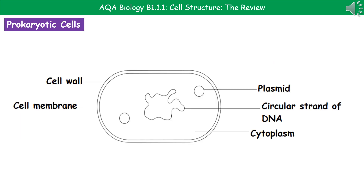The third type of cell we need to know about are prokaryotic cells, which are bacterial cells. There are five key features to know. Around the outside, there is still a cell wall and a cell membrane, just like in plant cells. But inside there are some key differences. We still have the cytoplasm, but rather than a nucleus, we have a circular strand of DNA in the middle. We also have plasmids, which are two circles that are present in some bacterial cells.